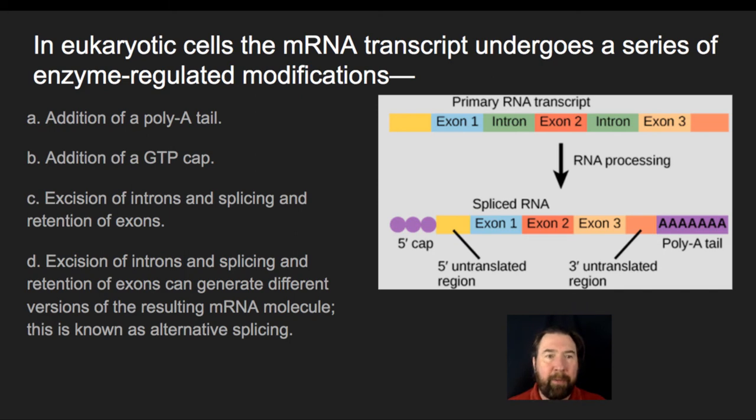they have the capacity to generate different versions of mRNA molecules. So there are instances where sometimes the signal will say, as in this case, exons 1, 2, and 3 will come together in order to make the RNA transcript.